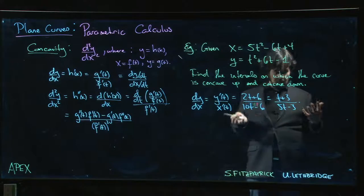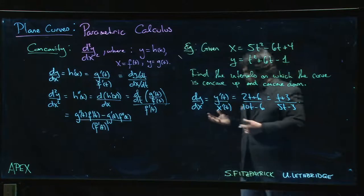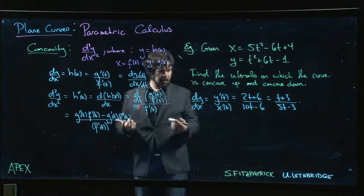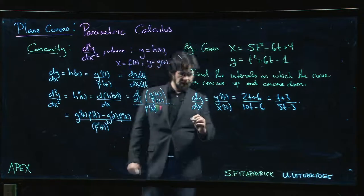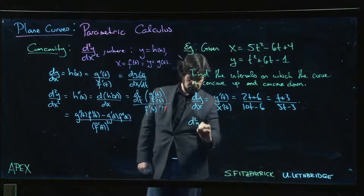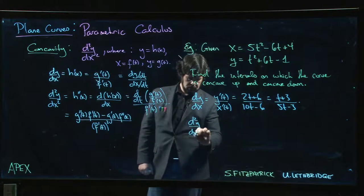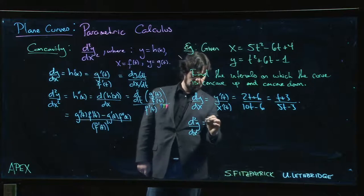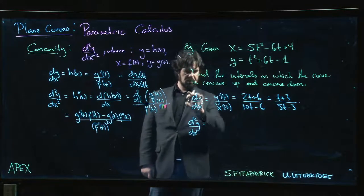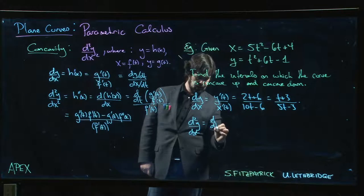That's what we worked out last time. Now let's think about what is the second derivative. So the second derivative d squared y over dx squared is going to be the derivative of the first derivative, but that looks like d/dt of dy/dx divided by dx/dt.